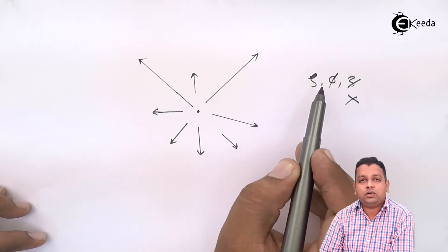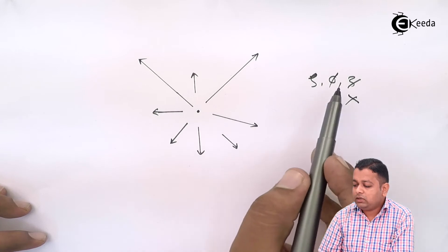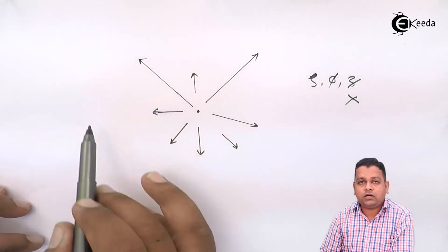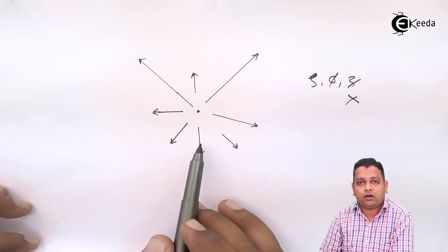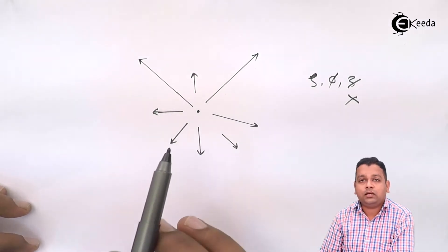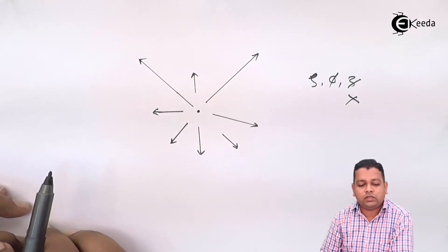Rho is the perpendicular distance of field point from the line charge. Now rho, phi here. We don't find any symmetry of phi in this particular diagram. That is why how exactly the electric field because of the line charge is there. That is not clear from this diagram.